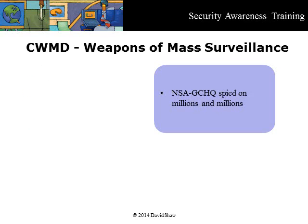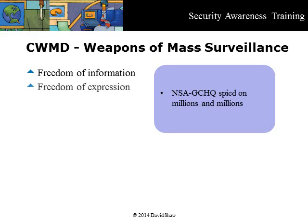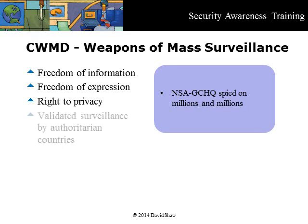Working together, the NSA and GCHQ have corrupted some of the basic principles of democracy: freedom of information, freedom of expression, and the right to privacy. Another consequence is that they have validated the use of surveillance by authoritarian countries around the world.